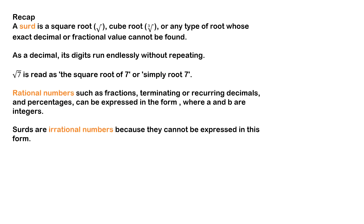To end this video, a quick recap: a surd is a square root, cube root, or any type of root whose exact decimal or fractional value cannot be found — as a decimal, when you put it in the calculator, its digits run endlessly without repeating. Rational numbers include fractions, terminating or recurring decimals, and percentages, all expressible in the form a over b where a and b are integers. Surds come under the category of irrational numbers because they cannot be expressed in that form.